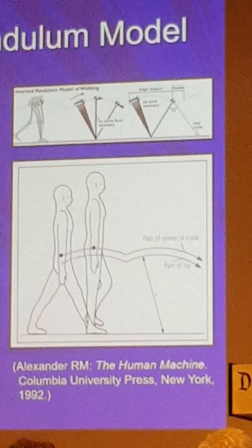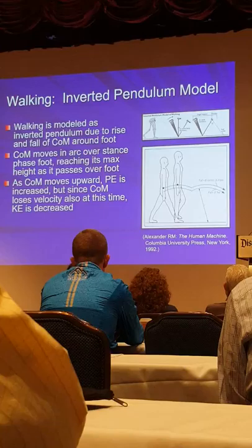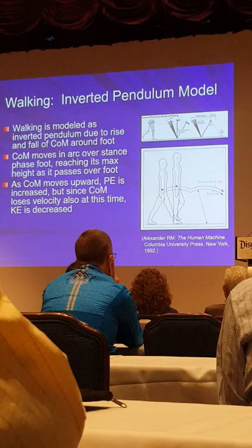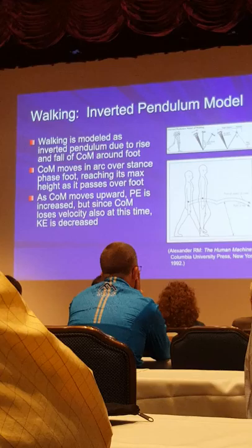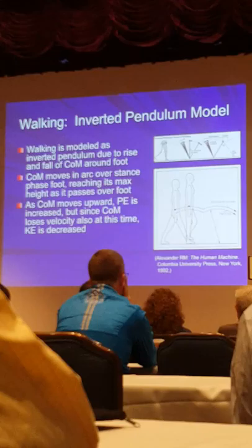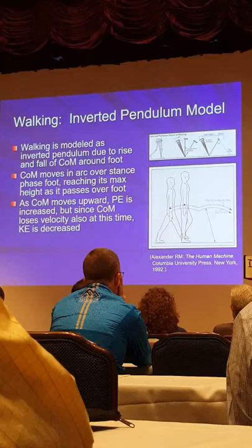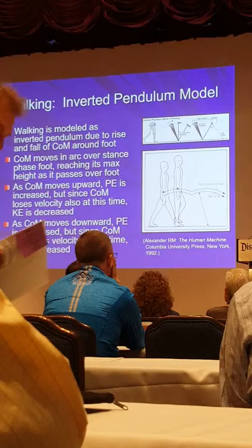The center of mass moves over the arc of the stance fixed foot. This creates an ability to exchange potential and kinetic energy — at the highest point of the center of mass, potential energy is greatest. As we go down, kinetic energy builds at the bottom but potential energy is lowest. Just like a pendulum, we maintain energy by going from low potential/high kinetic to high potential/low kinetic and back, maintaining metabolic efficiency during bipedal walking locomotion.